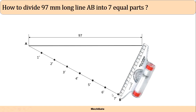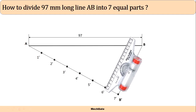This is AB dash, our auxiliary line divided into seven equal parts. Now join the end of the auxiliary line to our main line endpoint — join line BB dash using a roller scale. Using the roller scale, draw parallel lines to BB dash passing through points 6, 5, 4, 3, 2, and 1 respectively, drawing all projection lines.